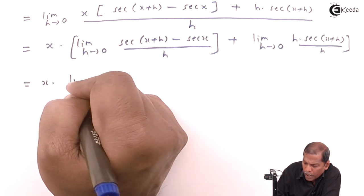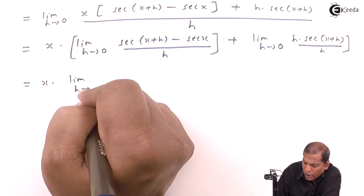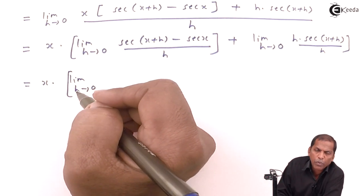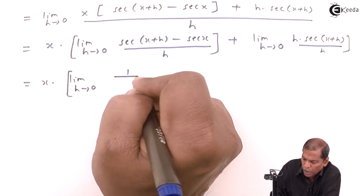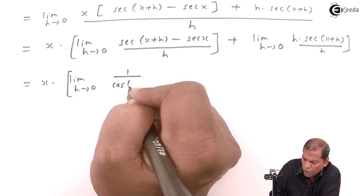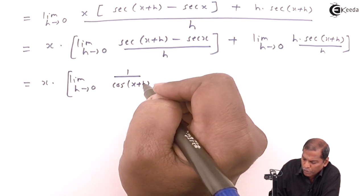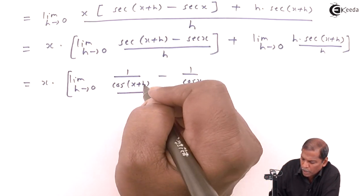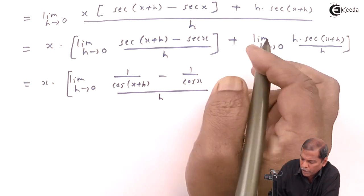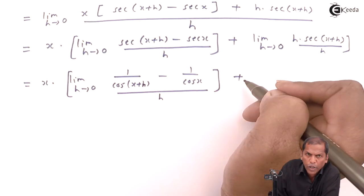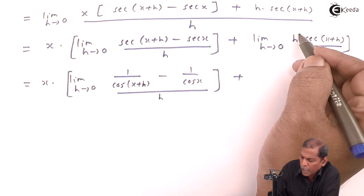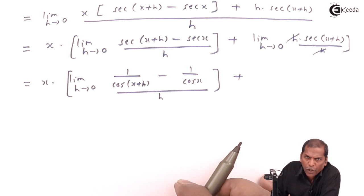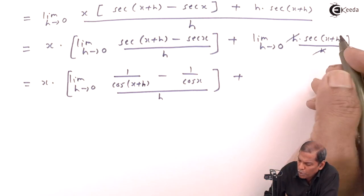That equals x times the limit as h tends to 0. Since sec(θ) = 1/cos(θ), we have [1/cos(x+h) minus 1/cos(x)] divided by h. In the second bracket we cancel h from numerator and denominator and substitute h tending to 0.